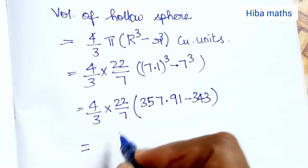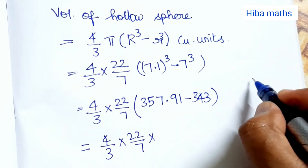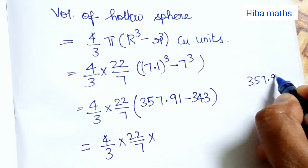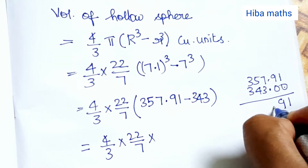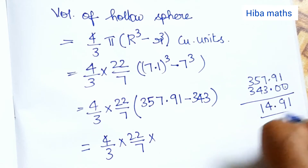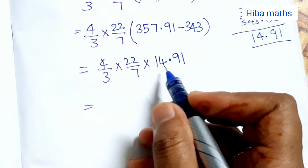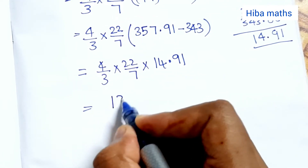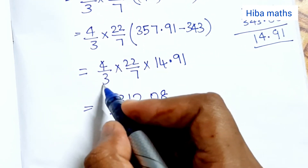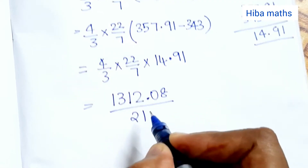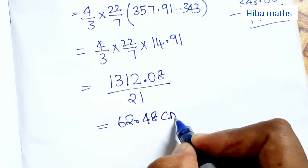Computing 357.91 minus 343 gives 14.91. After multiplying through and dividing by 3, the volume comes out to approximately 62.48 cubic centimeters.